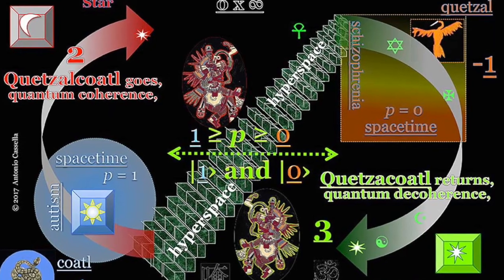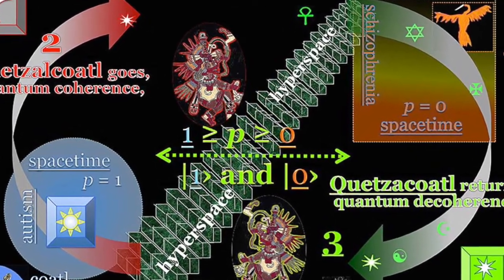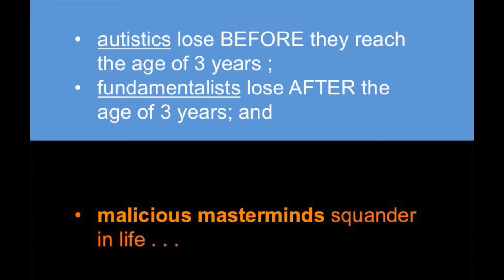I am pointing at the act of walking up and then down the ramp of Hilbert space that autistics lose before they reach the age of three years, fundamentalists lose after the age of three years, and malicious masterminds squander in life before waking up in the emptiness of a schizophrenic hell.